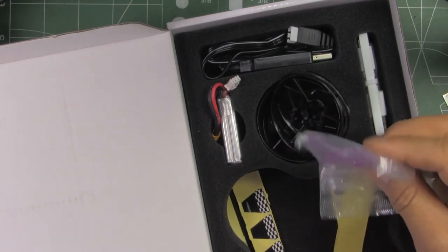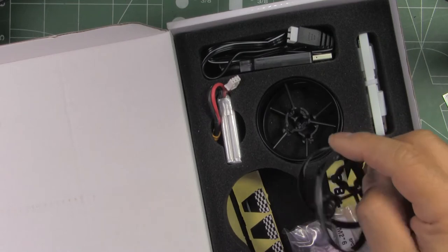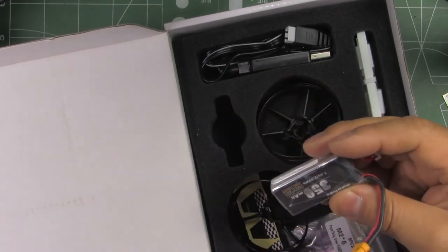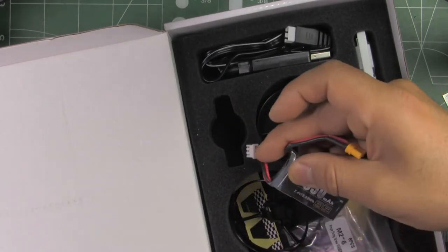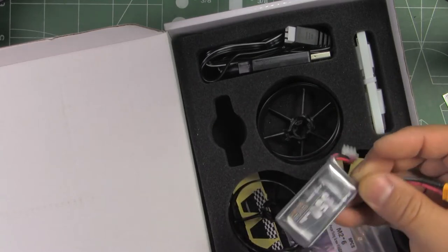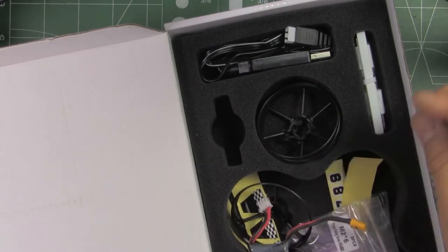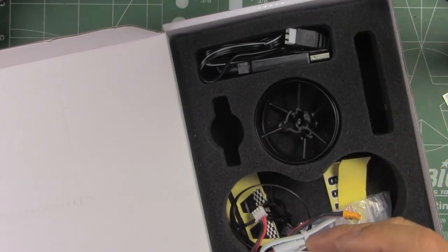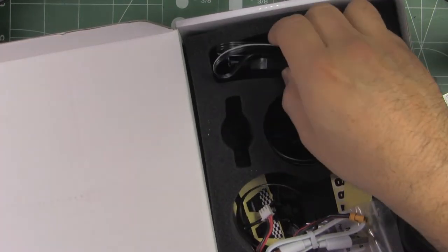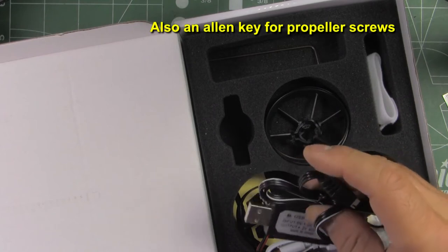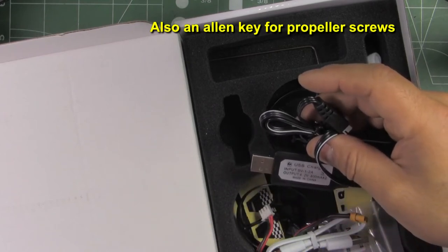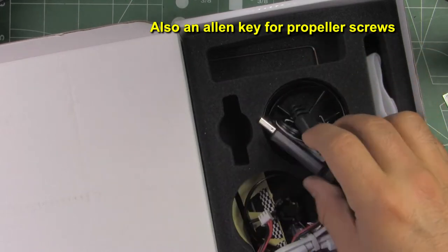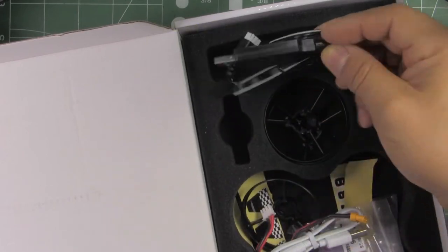They give you some extra propellers, a set of extra props with screws, a set of the propeller protectors, one 2S 350 milliamp 60C battery, so kind of small. We'll see how it flies. A USB cable, some Velcro strap, and a charger. This is for the battery. So this charges from USB. This is a 2S charger, so it'll charge from any USB adapter.